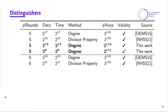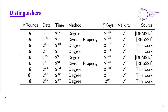For 6 rounds, the best known distinguisher has data complexity 2^31. We present three distinguishers based on different numbers of keys. The first has 2^104 weak keys with data complexity 2^24. Then we have another distinguisher with 2^110 weak keys and data complexity 2^18. We also show we can reduce the data complexity further to 2^17, but in that case the number of weak keys reduces to 2^95.